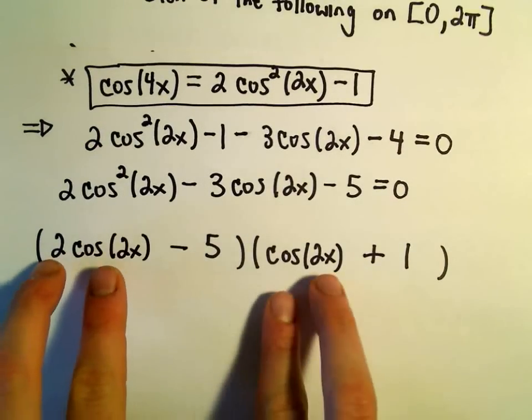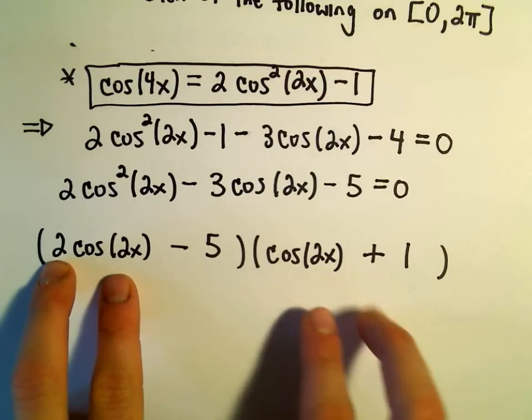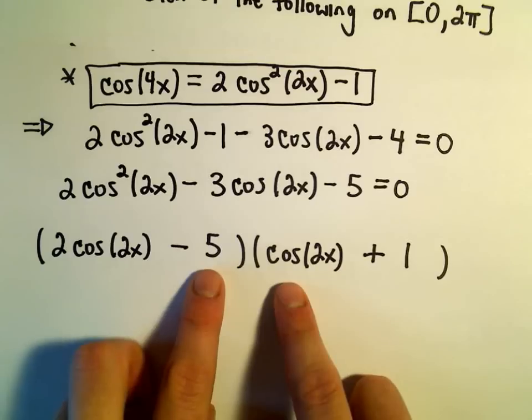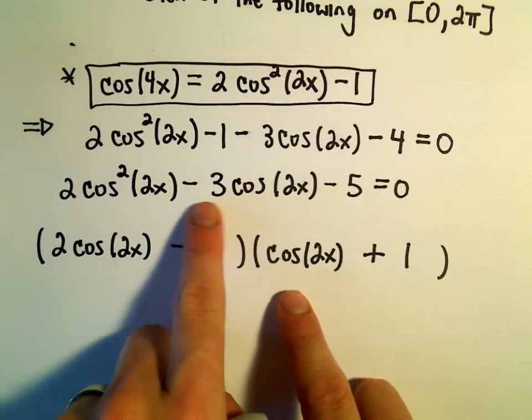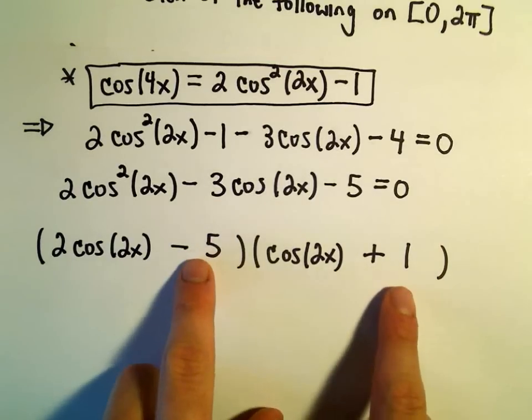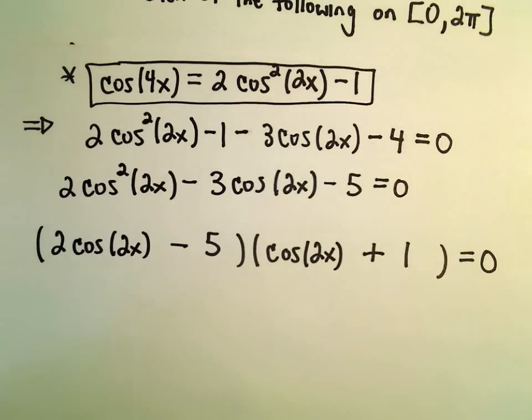I think if we use negative 5 here and positive 1 here, I believe this is going to factor correctly. So if we distribute, you can always write this all out. We'll get 2 cosine squared of 2x. We'll get a positive 2 cosine 2x. But then we'll get a minus 5 cosine of 2x, which will give us our negative 3 cosine of 2x. And then we'll get our negative 5. So this looks like a correct factorization to me.